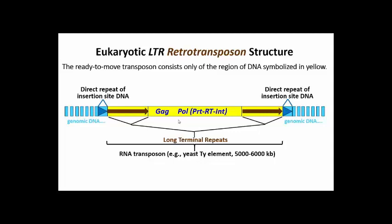The latter encode protein factors or enzymes required for transposition. GAG encodes group specific antigen, a structural protein that forms a virus-like particle containing reverse transcribed transposon DNA. RT encodes reverse transcriptase, which makes reverse transcribed copies of transcribed transposons. PRT encodes a protease that breaks down the virus-like particle as the retroposon enters the nucleus. INT encodes integrase, required for integration of the transposon into genomic DNA at a site of insertion.